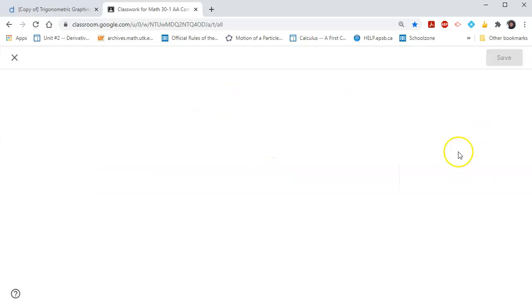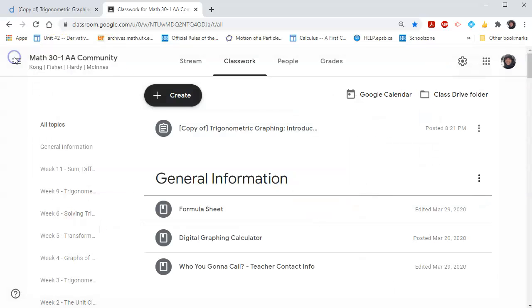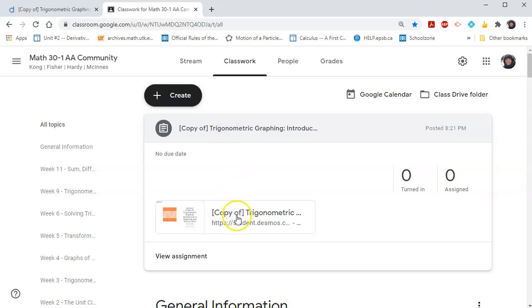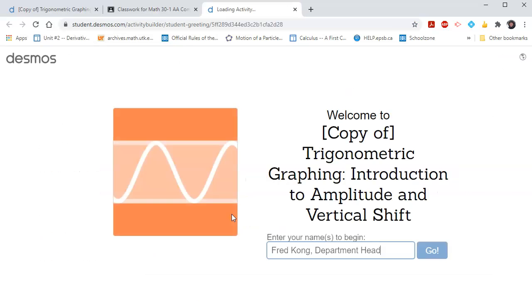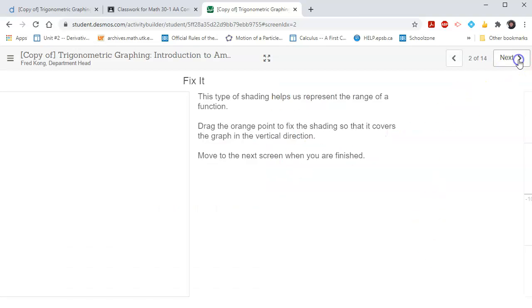So here I am in that classroom to which I assigned that Desmos activity and I'll go into classwork and you see that it's placed it there. Now, if I want to edit this and put it under a particular heading, I can do that. But I just want to go to this activity and you see that it's been sort of copied and pasted there. And when a student clicks on it, their name will show up here. So right now my name is showing up here as if I'm going to be a student and it is game on time. So I'm working through these 14 slides.